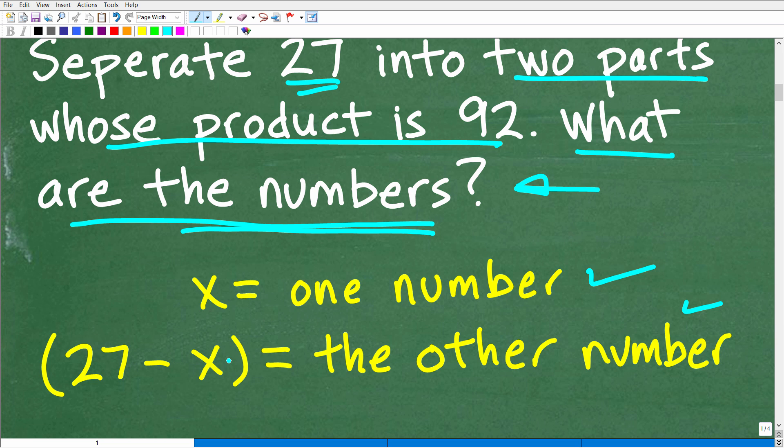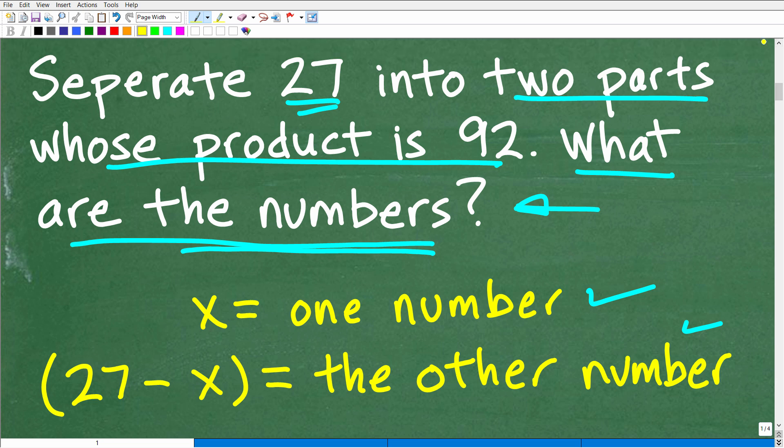Okay. So now that we have a 27 broken up into two parts, we need to use the next part of the problem to come up with an equation. And that's really the next thing. Once you have some variable expressions established from the problem, you can't solve for an unknown value without constructing an equation. So that's what we need to do.